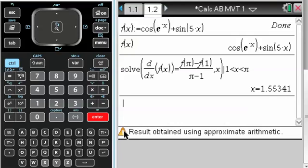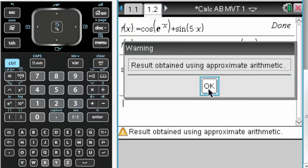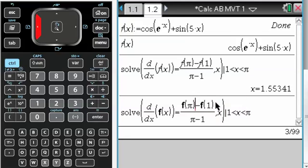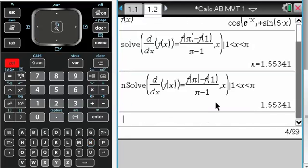I get a warning here, let's see what that is. Okay, so approximate arithmetic has been used. You can actually do this on the non-CAS inspire as well if you just use n-solve, and it gives you that. It doesn't give you a warning.